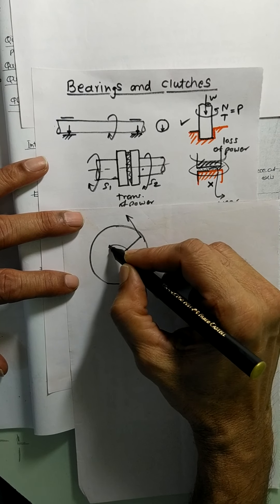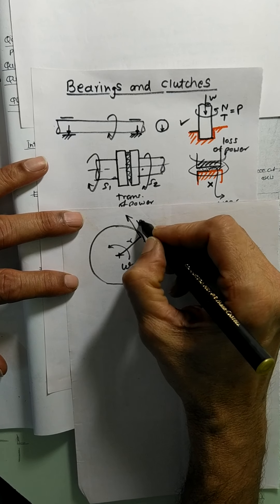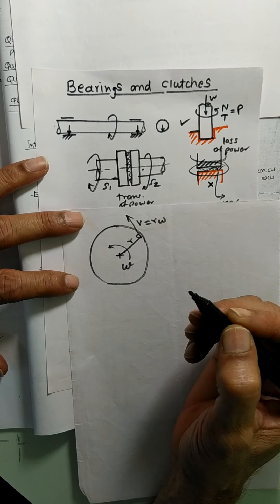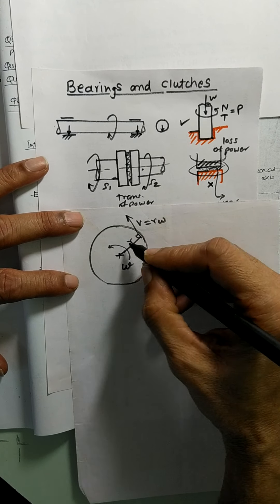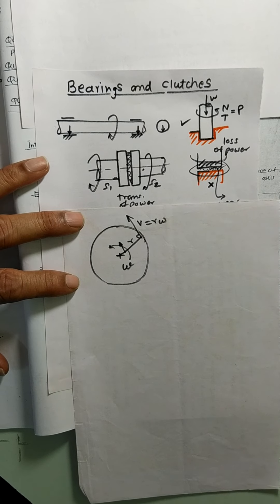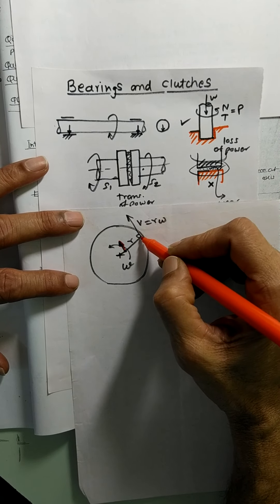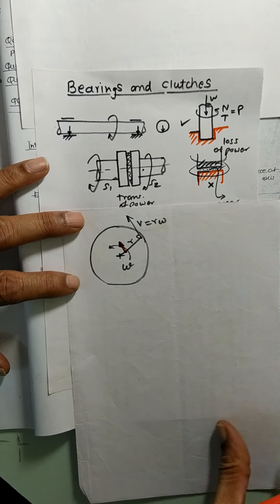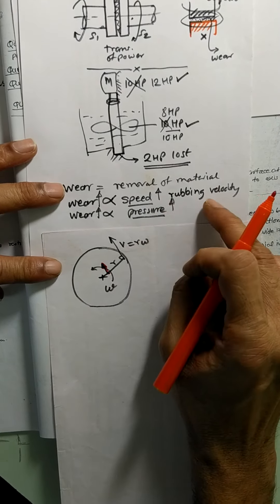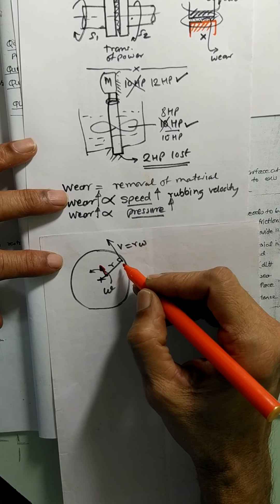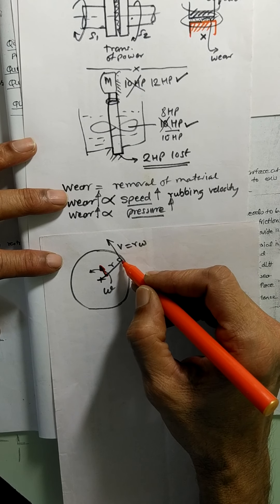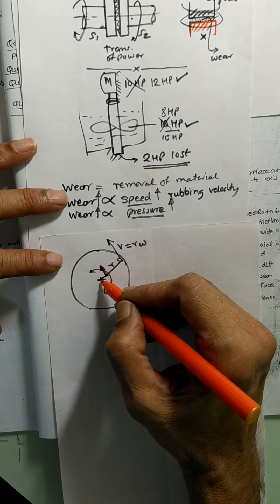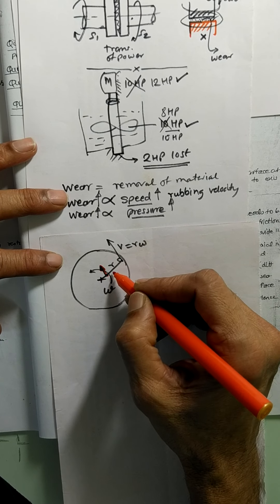The point away from center has more velocity; the point nearer to center has less velocity. Since wear is proportional to rubbing velocity, the points which are away from center have more rubbing velocity — meaning wear takes place more for points away from center, and less for points nearer to center. Wear means removal of material.